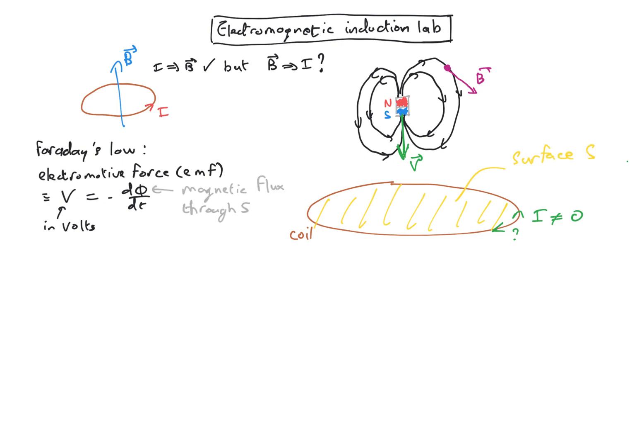Now of course, because you produce a current you are also going to produce a magnetic field. And the sign here tells us that the magnetic field which is produced by this current is always going to oppose the magnetic flux induced by the magnet moving through the coil. So that's how we determine which direction we actually have for the current induced by the motion of the magnet.